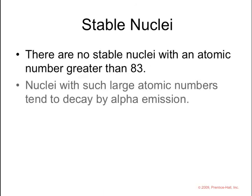Interesting to note, was brought up in the video, that there are no stable nuclei with an atomic number greater than 83. Nuclei with a large atomic number tend to decay by alpha emission because that brings down both the number of neutrons and protons.